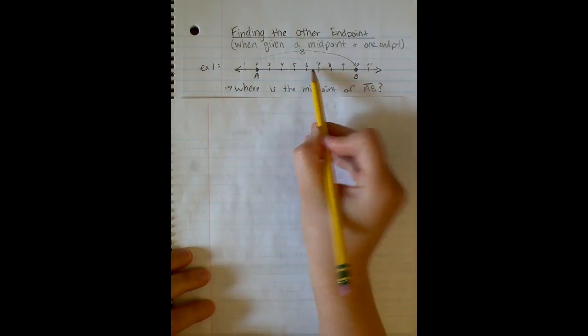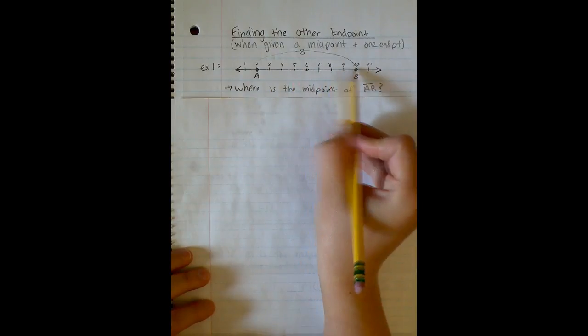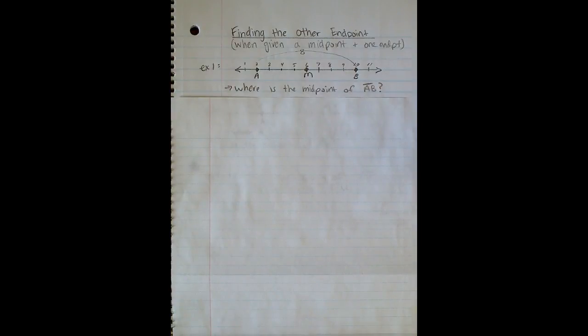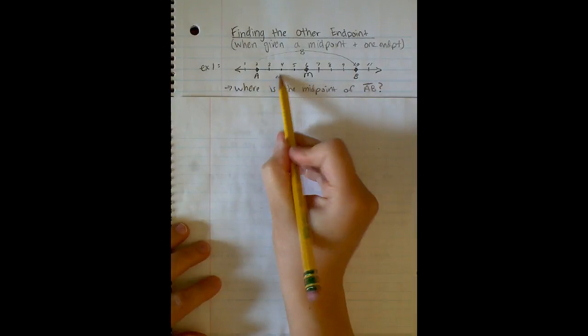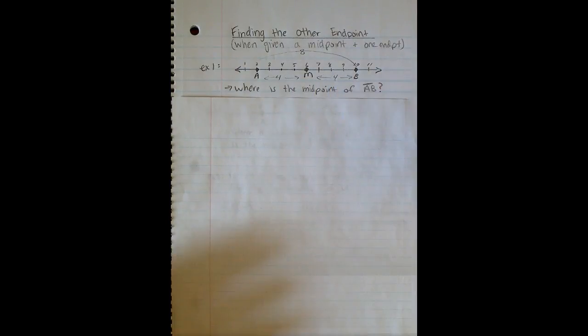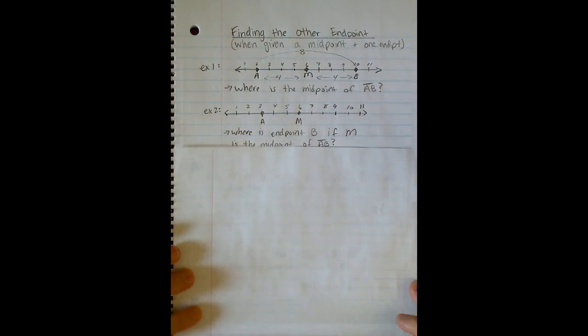If I cut that into two equal parts, each one would have to be 4 units. So 1, 2, 3, 4, 1, 2, 3, 4. So my midpoint must be on my number line at unit 6 to make two equal segments that have a length of 4. Pretty easy review. So what if I change the question?